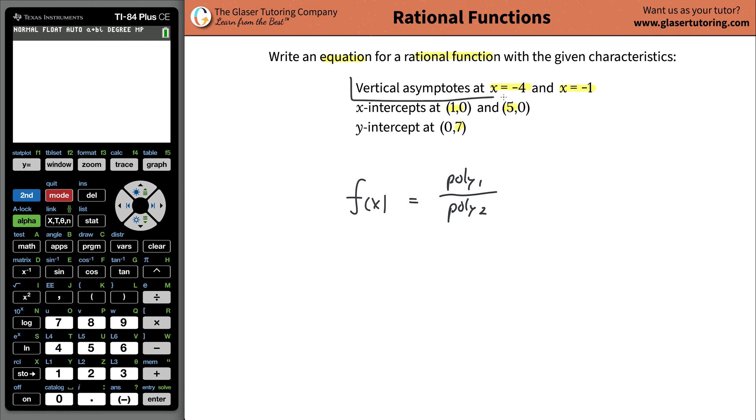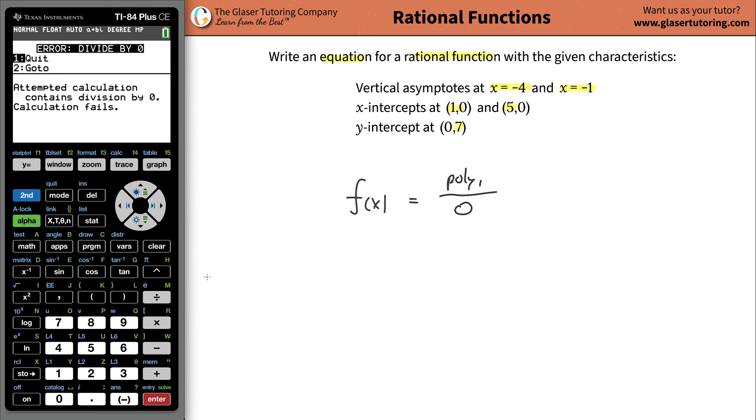Now let's take a look at the vertical asymptotes first. Vertical asymptotes are basically going to indicate the x values that the function cannot have. So the only thing that's going to mess up this rational function is if the denominator is zero. You can't divide anything by zero. Watch, go to your calculator, do five divided by zero, and it's going to yell at you.